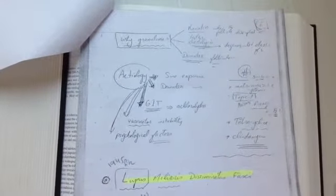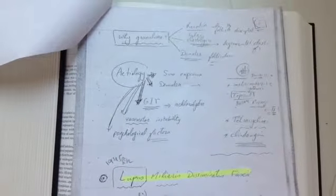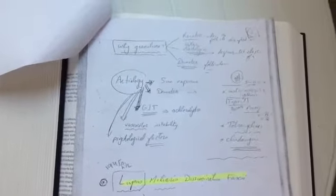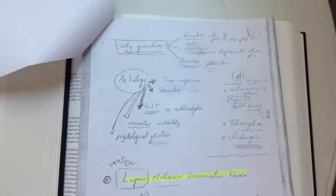The etiology is from sun exposure, Demodex folliculorum, GIT, achlorhydria, and vasomotor instability, and psychological factors. These are the etiologies: sun exposure, Demodex, GIT, vasomotor instability, psychological.